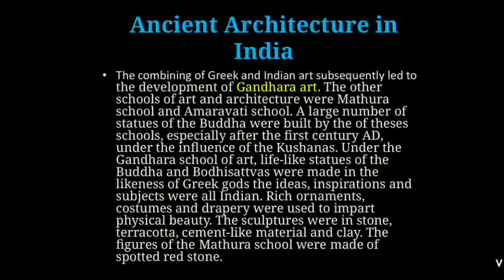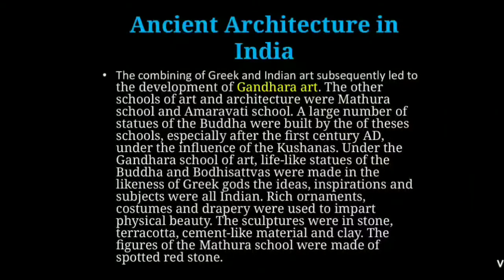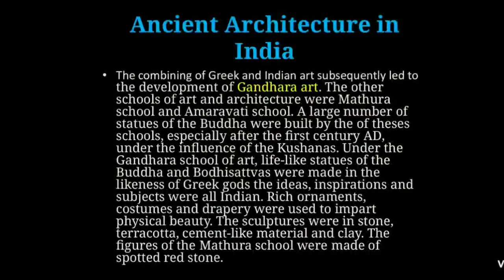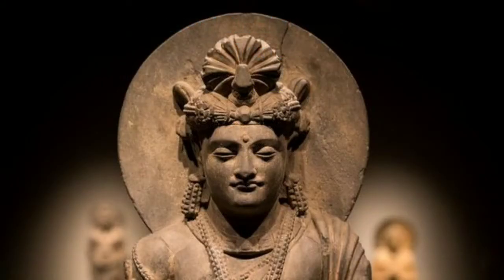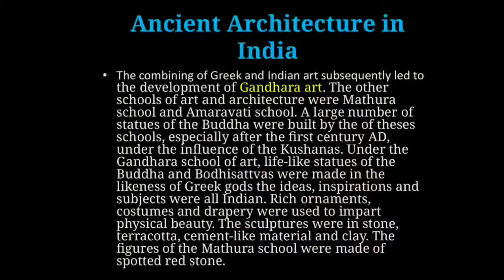The combining of Greek and Indian art subsequently led to the development of Gandhara art. The other schools of art and architecture were the Mathura school and the Amaravati school. A large number of statues of Buddha were built by these schools, especially after the first century AD under the influence of the Kushanas. Under the Gandhara school of art, lifelike statues of the Buddha and Bodhisattvas were made in the likeness of Greek gods. The ideas, inspirations, and subjects were all Indian.